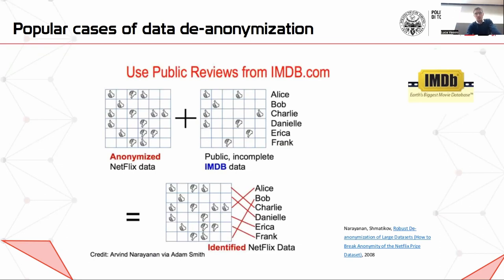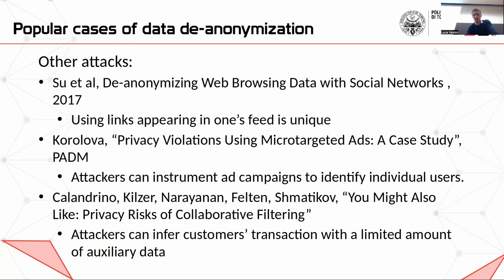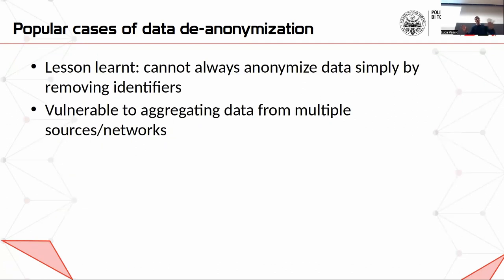There are many other examples of attacks. The important thing from this first part is that you cannot always anonymize data simply by removing the identifiers. Often the most vulnerable part is that if the attacker has another database that they can merge. A priori, when you publish some data, you don't know what data is available to other people. So you cannot try to combine all the other available datasets in the world and be sure that individual data cannot be recovered.